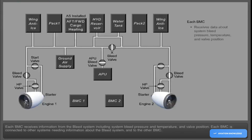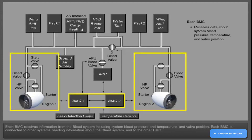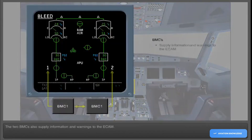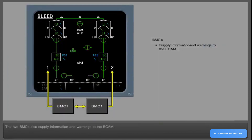Each BMC receives information from the bleed system, including system bleed pressure and temperature and valve position. Each BMC is connected to other systems needing information about the bleed system and to the other BMC. The two BMCs also supply information and warnings to the ECAM.